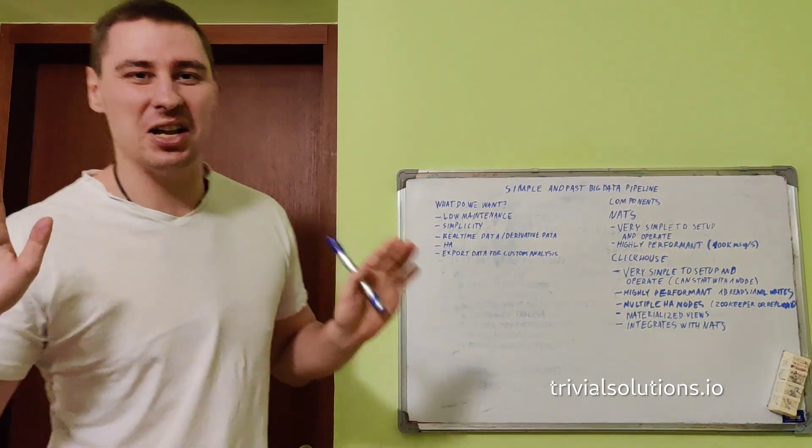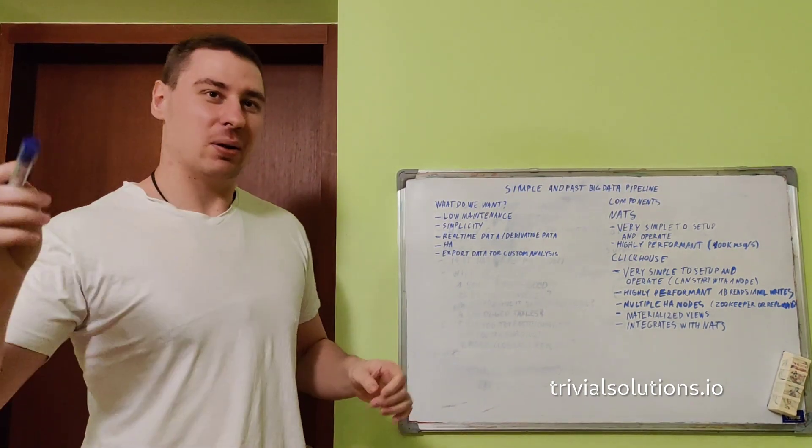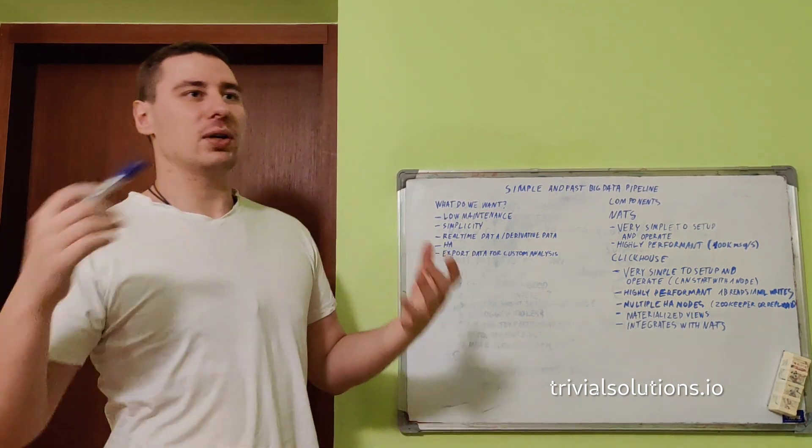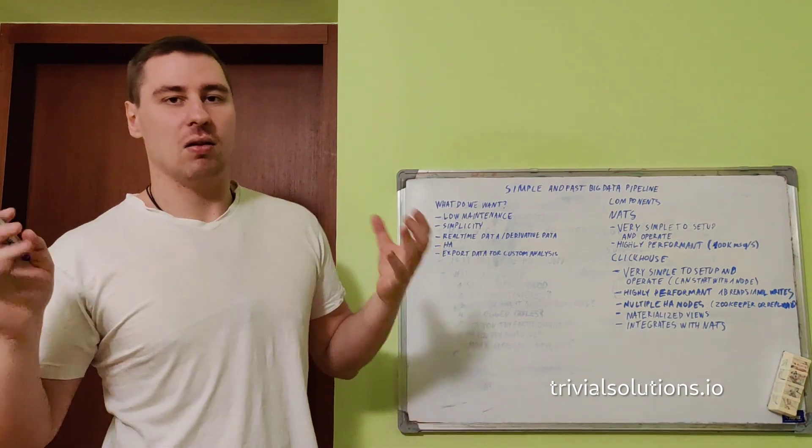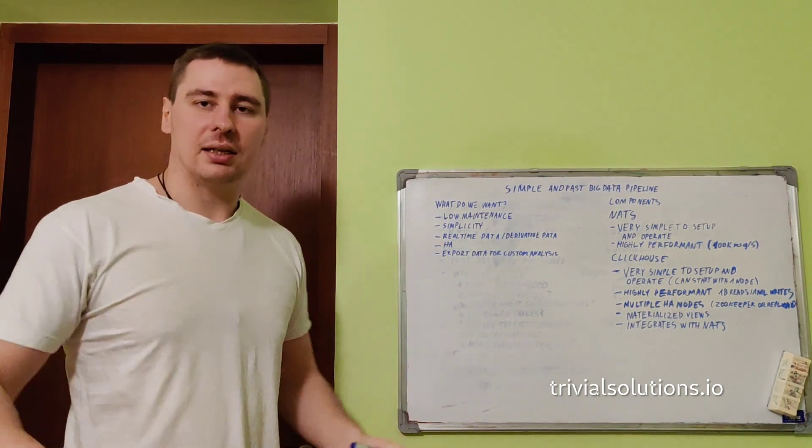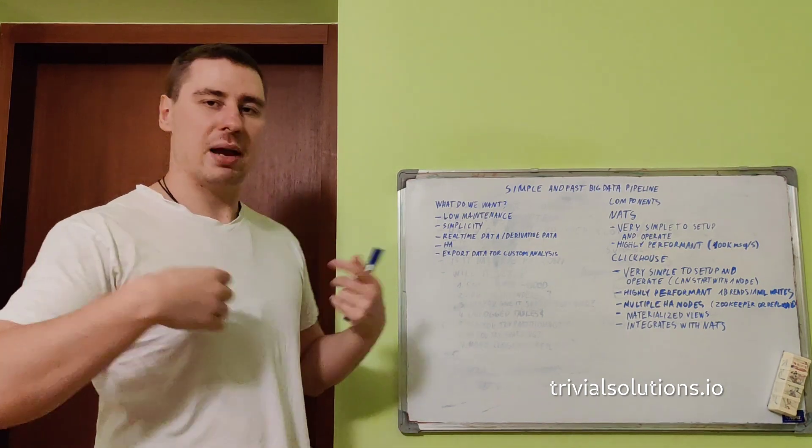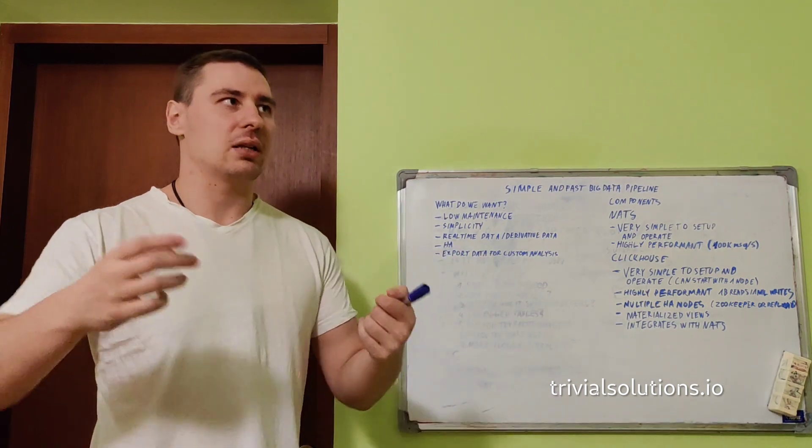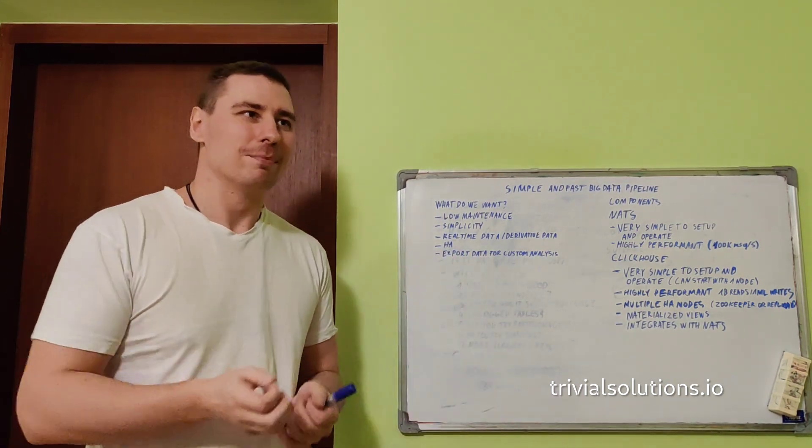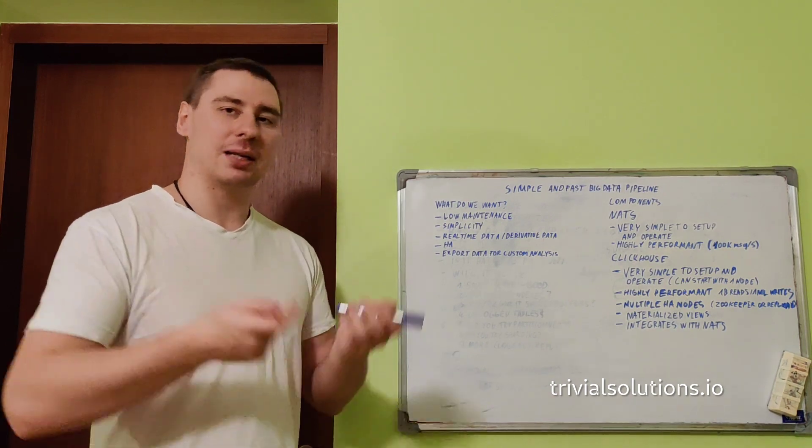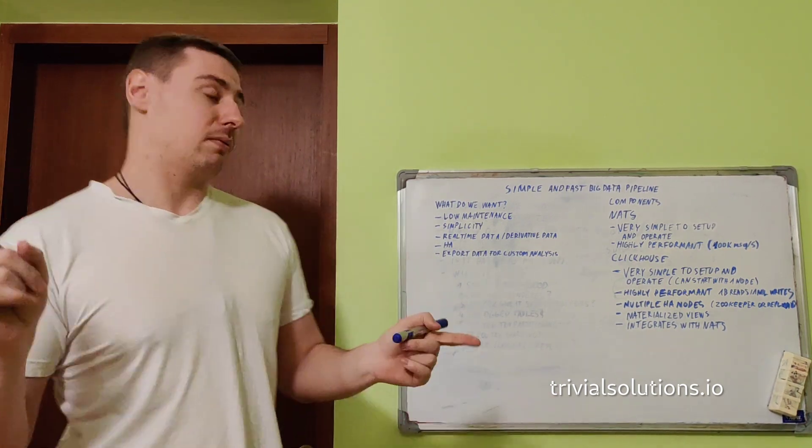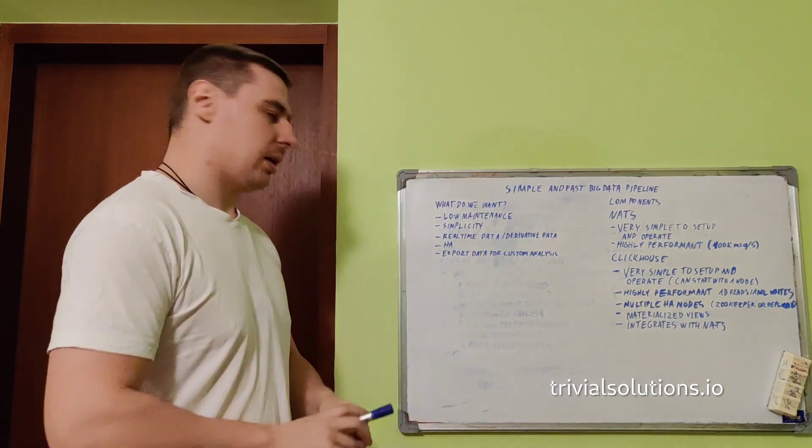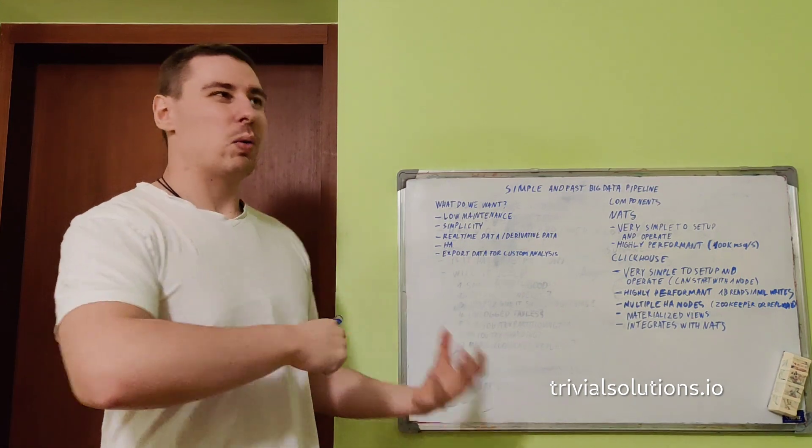Ideally we just deploy once, monitor it, and forget that it exists. We want simplicity - simplicity of maintenance and simplicity of deployment. We want simple architecture because simple architectures are nice in general. Simplicity also scales well.